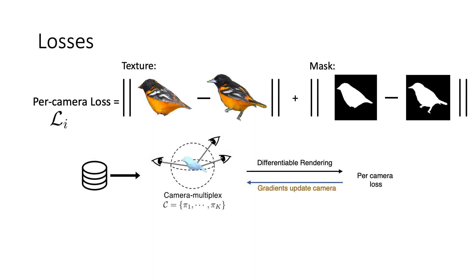The cameras in the multiplex are updated to minimize this per-camera loss. The total loss used for updating the shape and texture predictor is the expected camera loss, with some shape regularization priors.